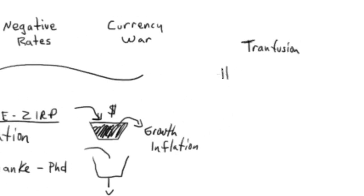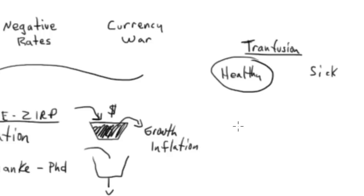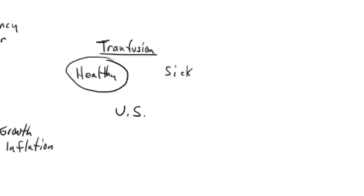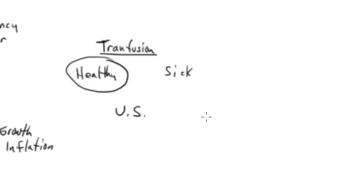You would obviously choose the healthy patient. So who's the only healthy player in the world economy? The United States. So what are some possible 'pins in the balloon' scenarios for a next correction?